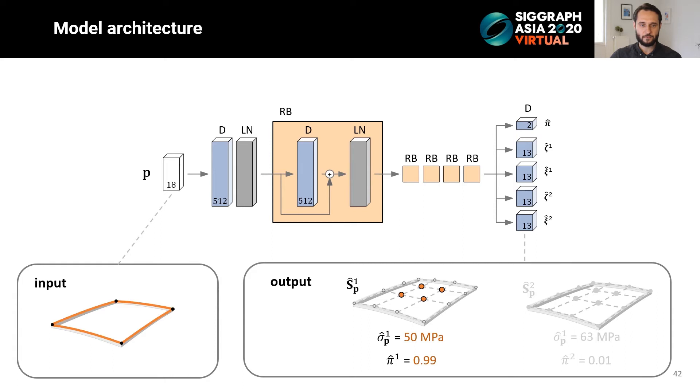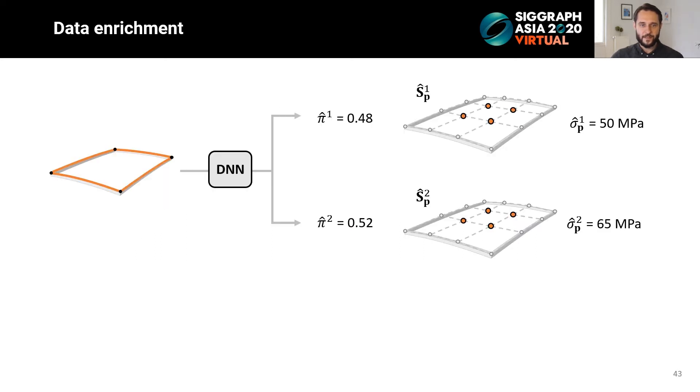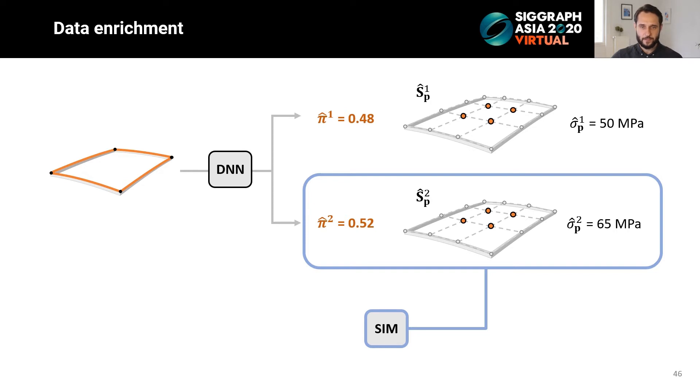We train the model on more than a million simulated panels. The training takes around 20 hours on an NVIDIA Titan X. As a data enrichment process, the training model was then used to identify boundaries in the database that output two alternative predictions, both with high confidence, where one of them did not correspond to an entry in the database. Initializing our simulation procedure with these predictions resulted in the discovery of new minimal energy panels for that given boundary. These were then added to the database and used to retrain the regressor, further increasing the accuracy of the model.